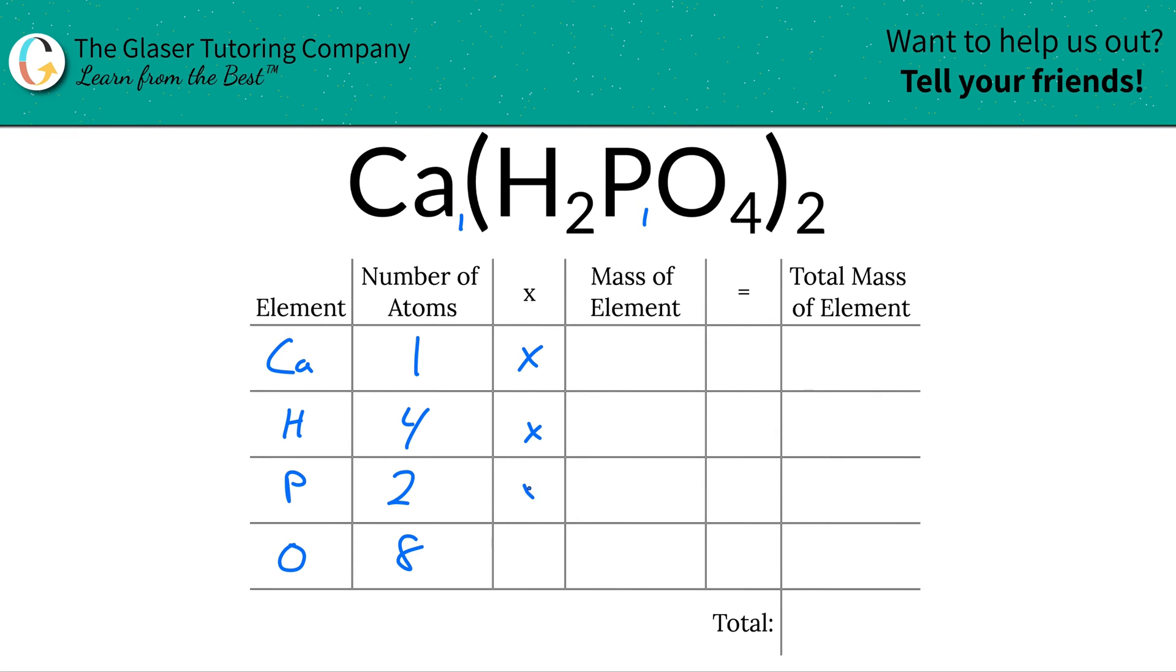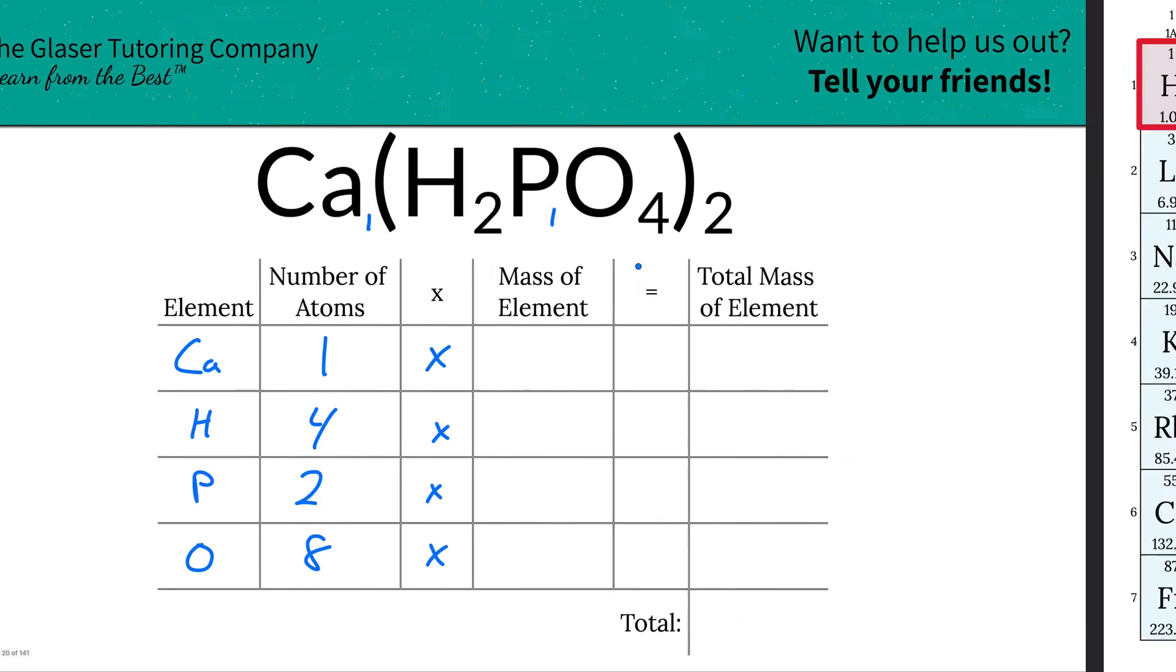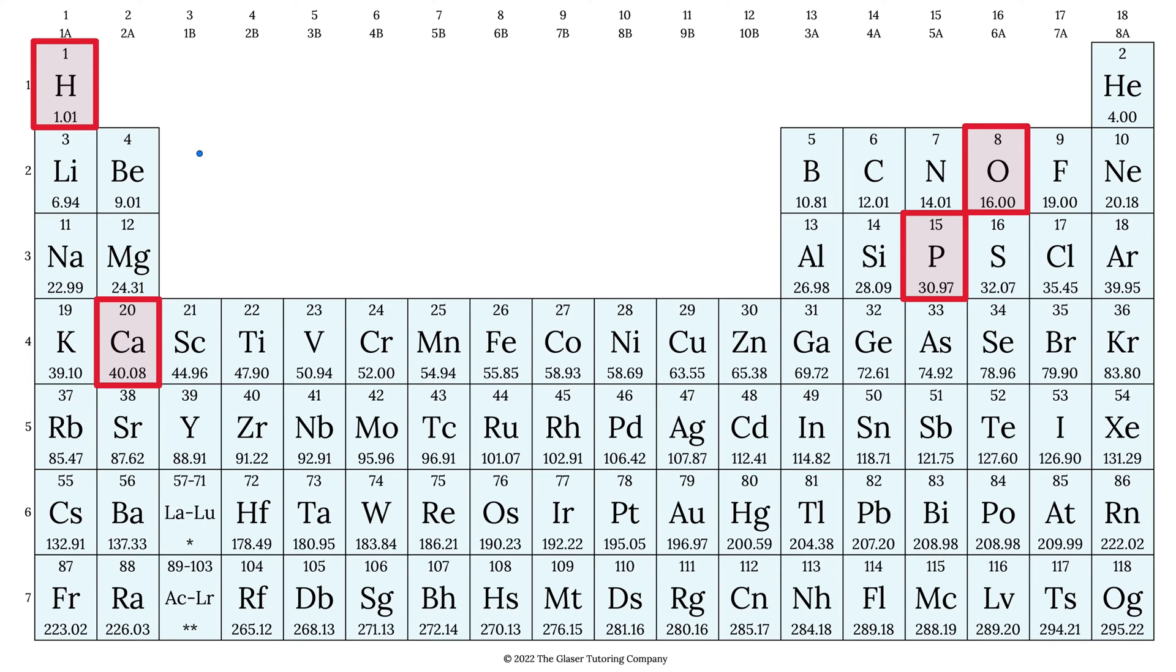Now all we're simply going to do is multiply these number of atoms by the mass of each particular element, and guess where we look for the masses? Yes, the periodic table. So let's take a look. Here is the mass of calcium, 40.08, hydrogen is 1.01, phosphorus is 30.97, and oxygen is 16.